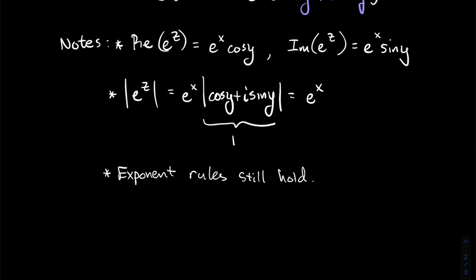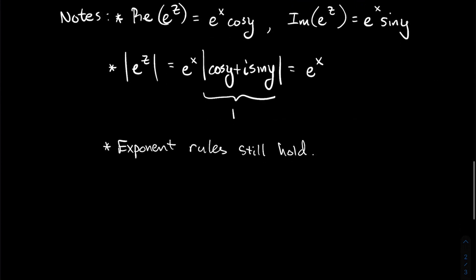Exponent rules still hold for the complex exponential: e^(z₁ + z₂) equals e^z₁ times e^z₂, and all that good stuff.